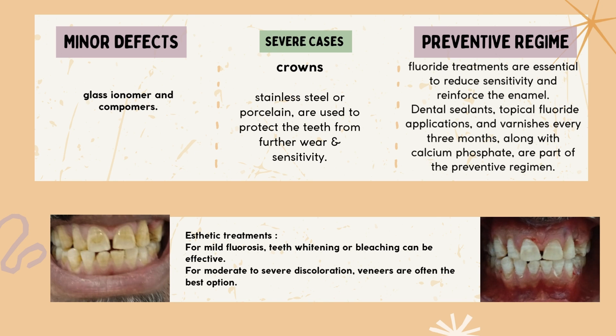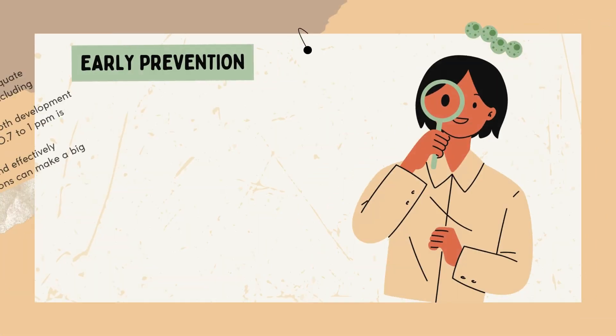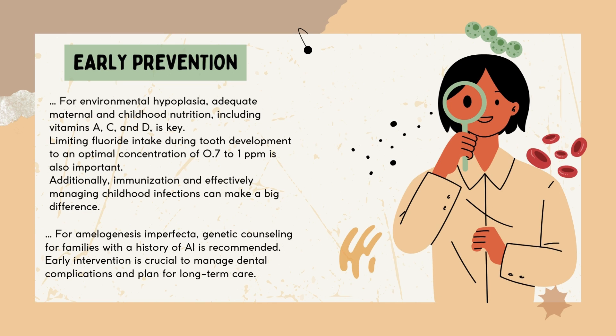Aesthetic treatments can make a significant difference. For mild fluorosis, teeth whitening or bleaching can be effective. For moderate to severe discoloration, veneers are often the best option. Preventive measures are crucial: early diagnosis and intervention with fluoride management can help. Regular dental checkups are essential to monitor tooth development. It is also important to avoid excess fluoride intake during early childhood.